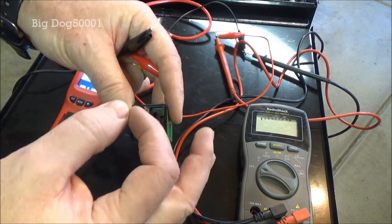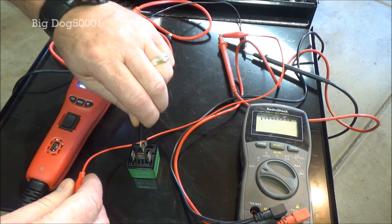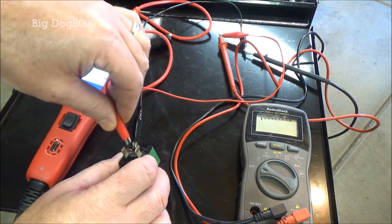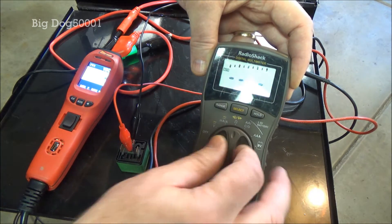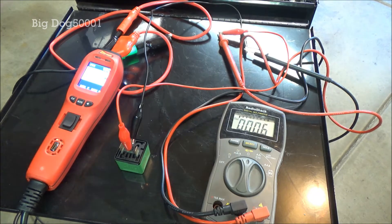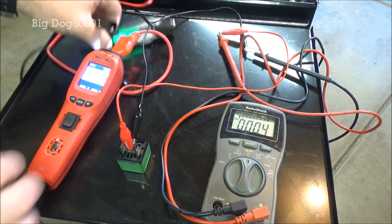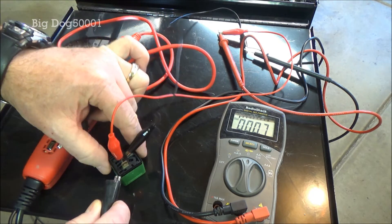So we will just put our DVOM right there. We'll check it for continuity. And then we just need to apply power and ground to the other side. I'm just using my power probe to do this.